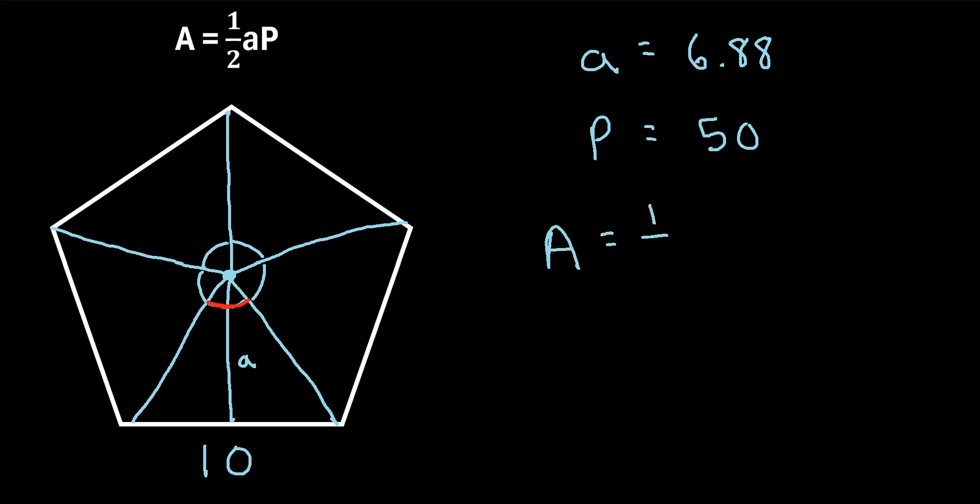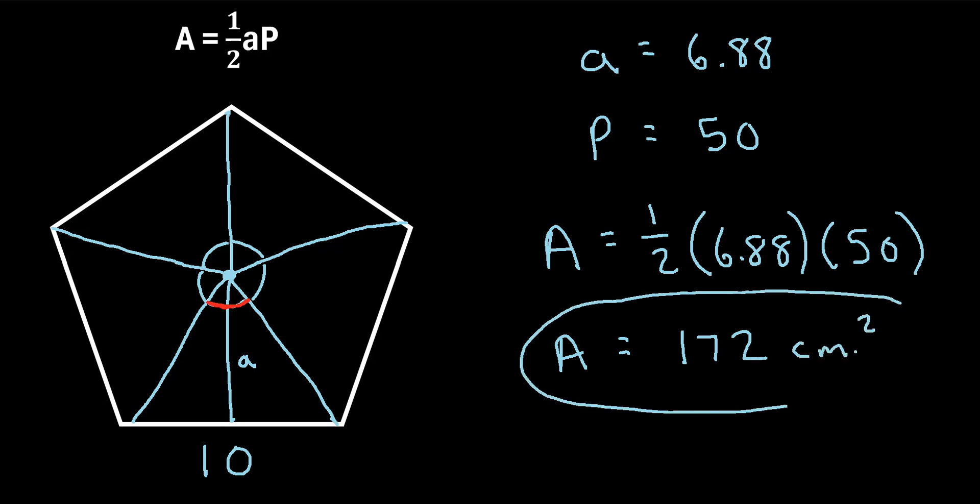we find that the area is 1 half times the apothem times the perimeter. And if you punch all this into a calculator, you'll get about 172. And let's just say we're working in centimeters. So we'll say centimeters squared, since we're talking about area. So that is how you can find the area of a regular polygon given only the side length.